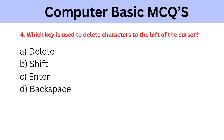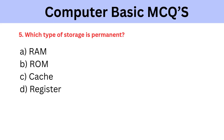Which key is used to delete characters to the left of the cursor? A) Delete, B) Shift, C) Enter, D) Backspace. The correct answer is Backspace. Which type of storage is permanent? A) RAM, B) ROM, C) Cache, D) Register. The correct answer is ROM.